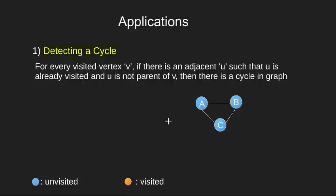Now the basic algorithm is to see that for every visited vertex V, if there is an adjacent U such that U is already visited and U is not parent of V, then we say we have a cycle.